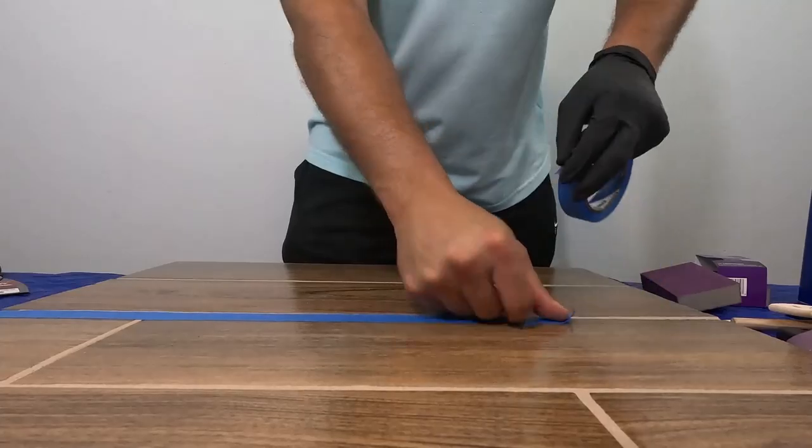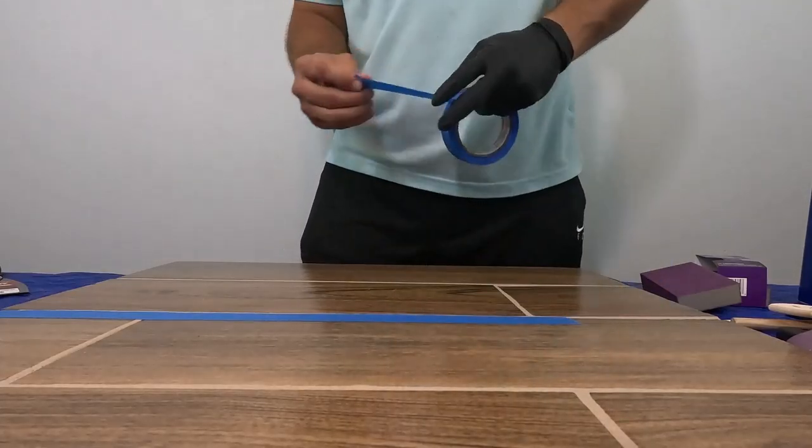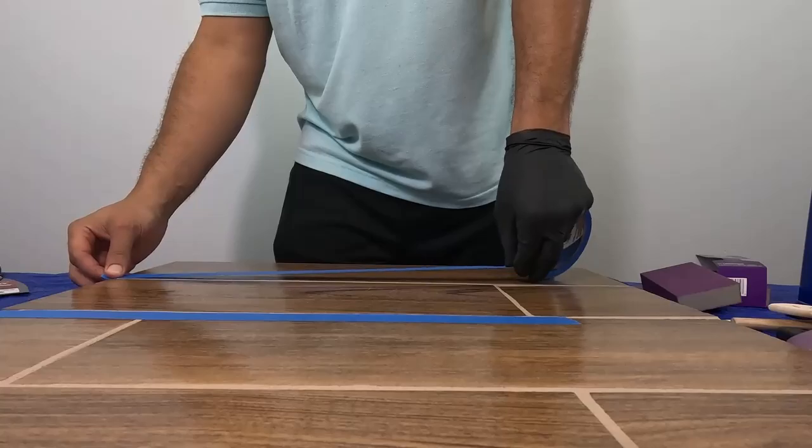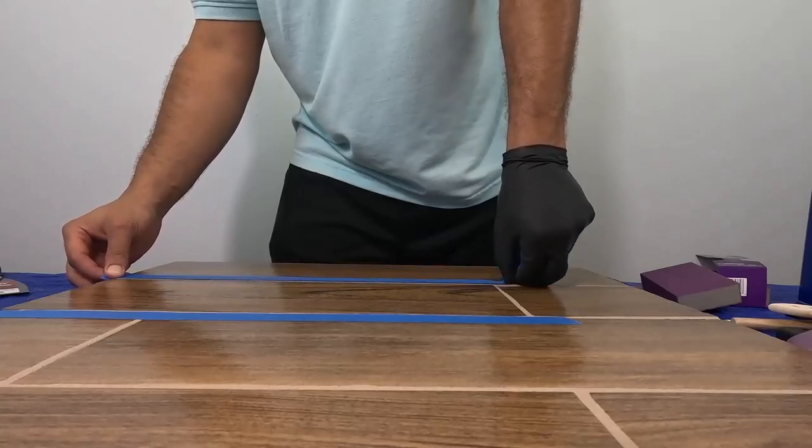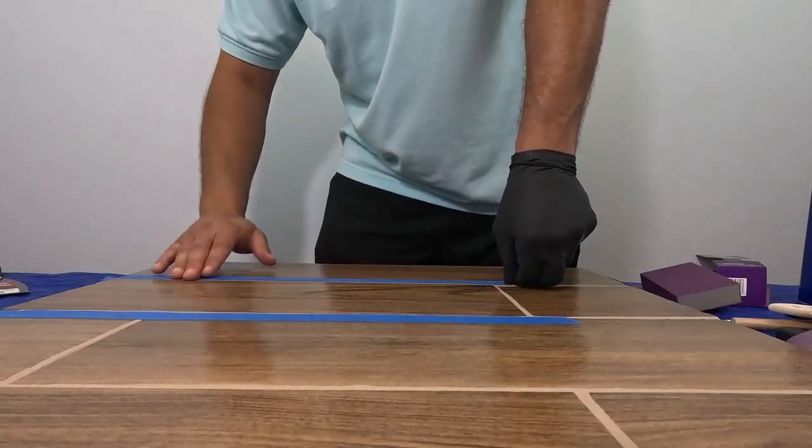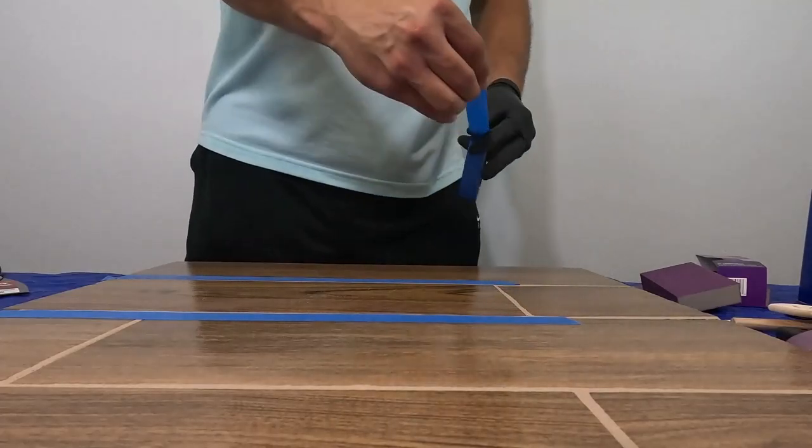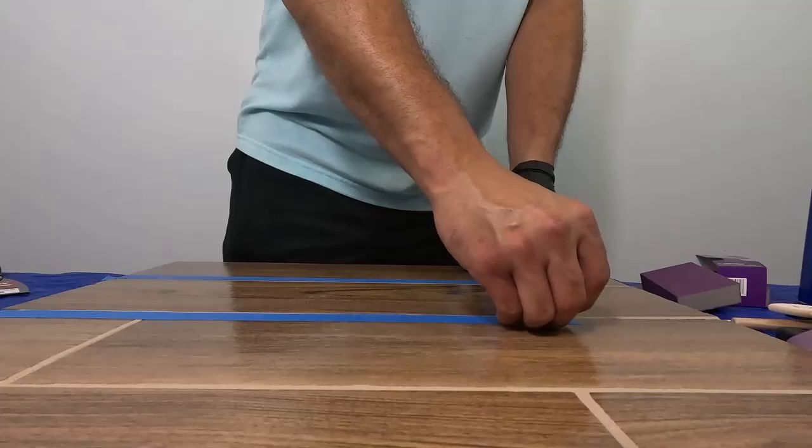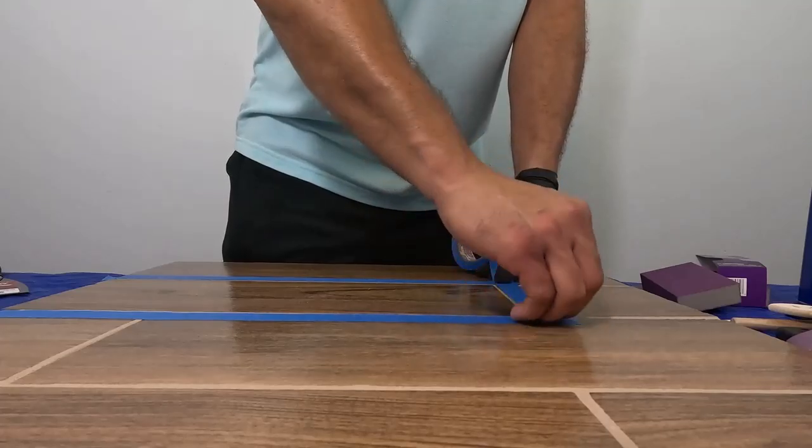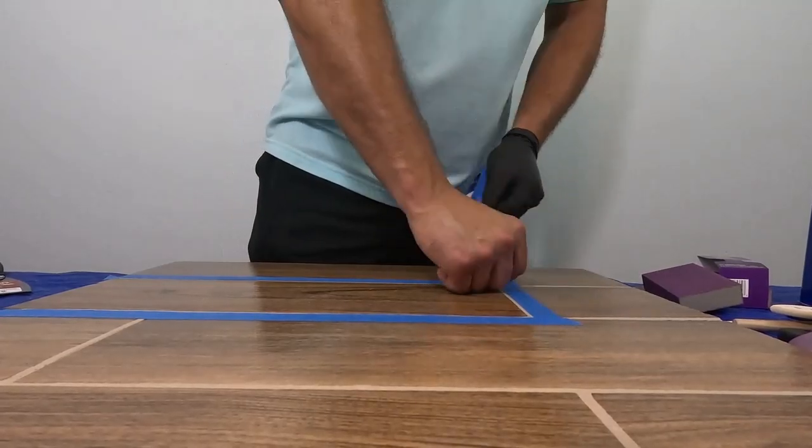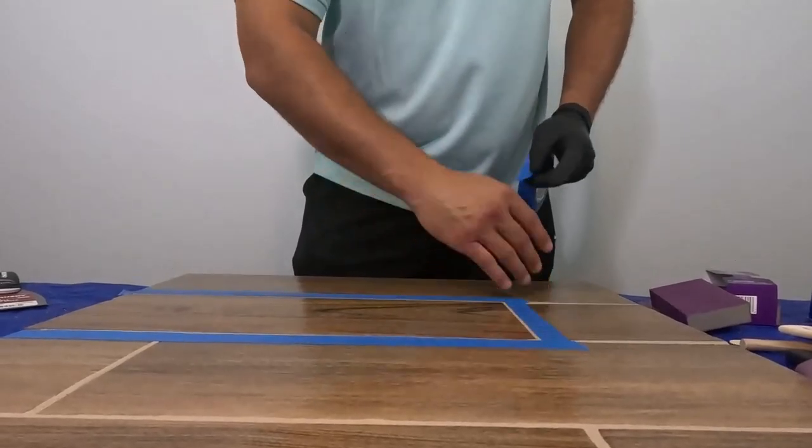The first thing to do is use painter's tape and use the grout lines as your guide. Tape around the outside of the grout line so that you finish any recoating within the tile, not in the actual grout.